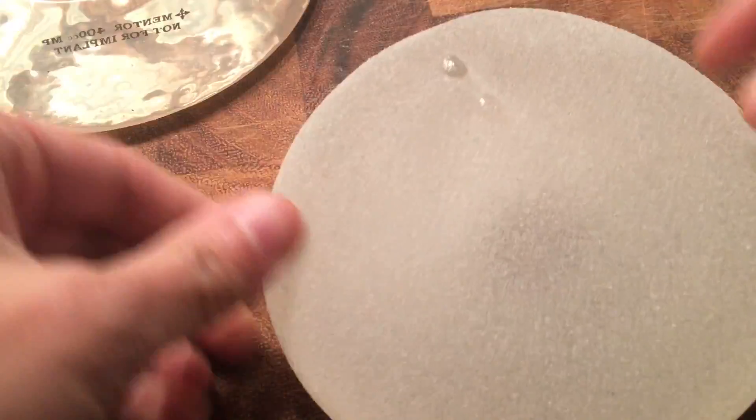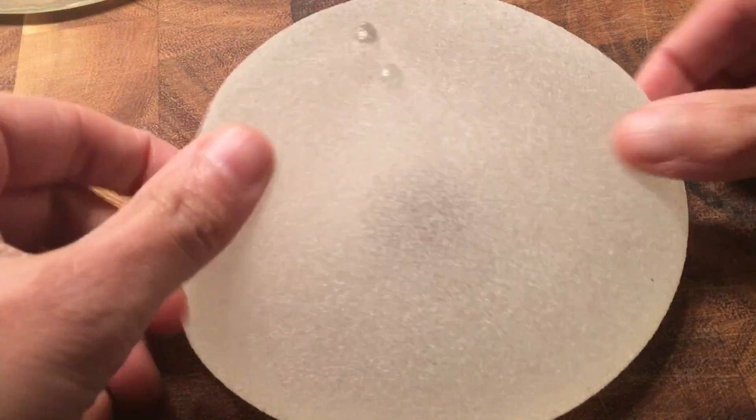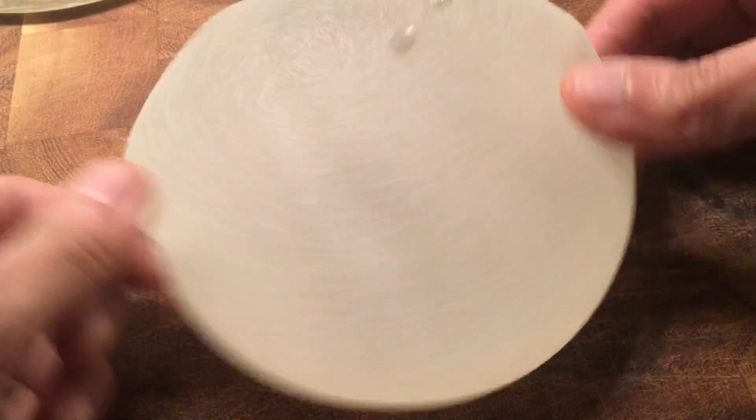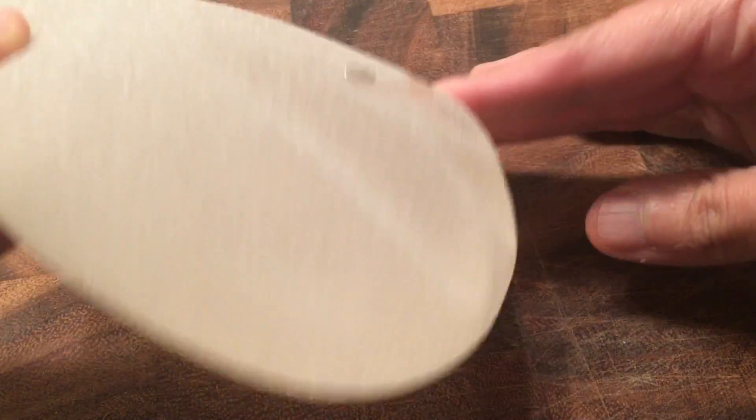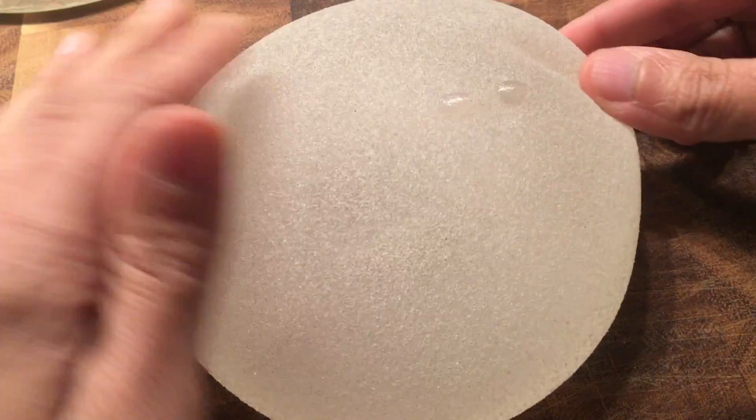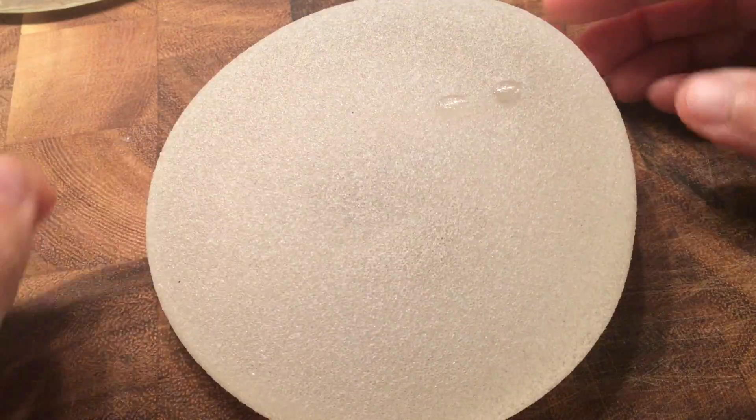The other one that we're going to look at is what we traditionally call a gummy bear implant. So if you open it up it should be fairly cohesive and this is the one that has the anatomic shape and it's cohesive. It has a cohesive gel to hold that shape.